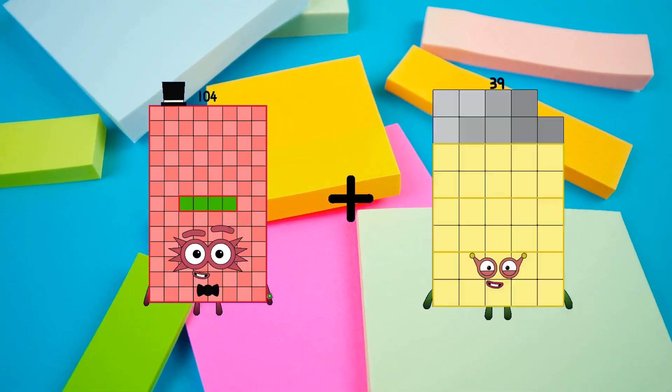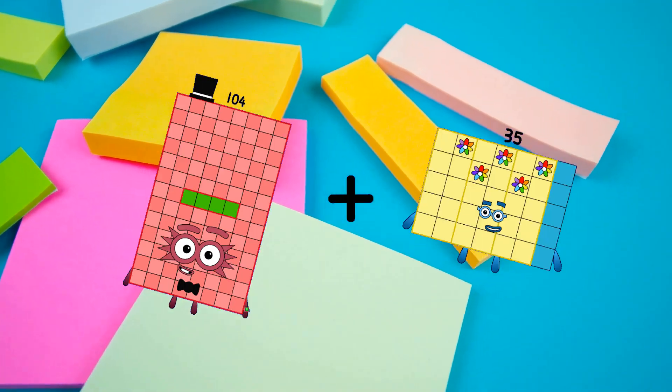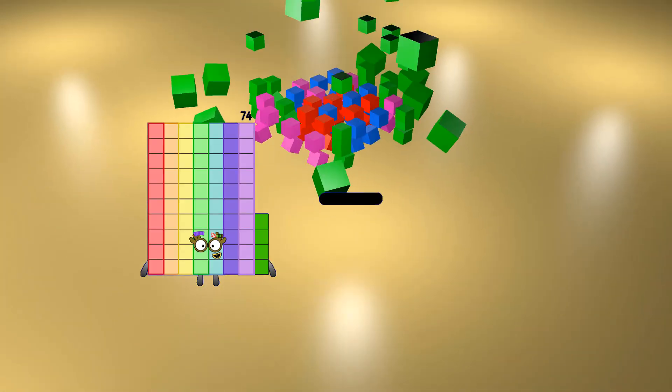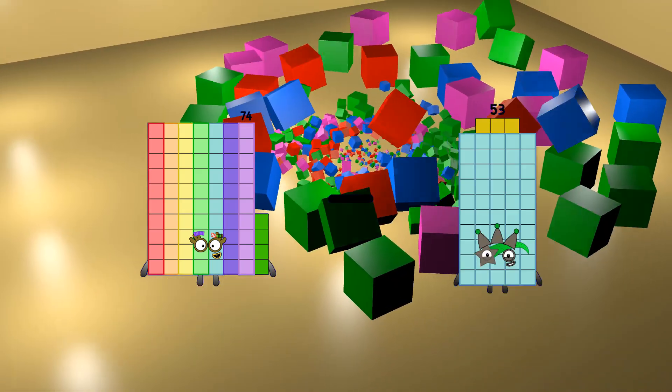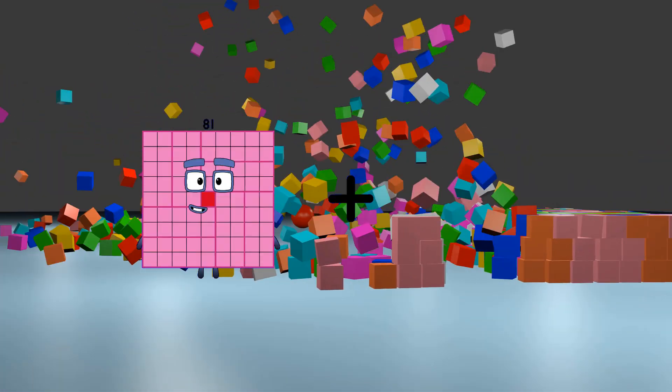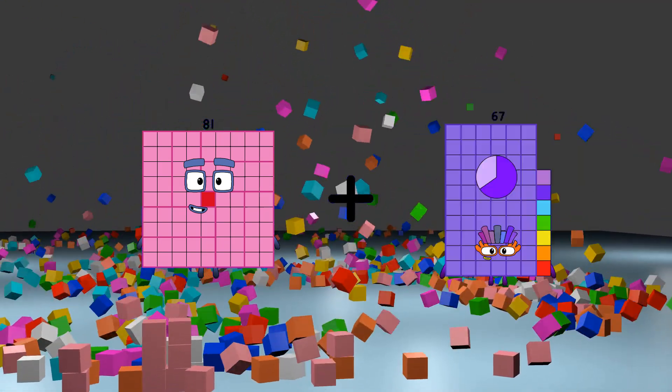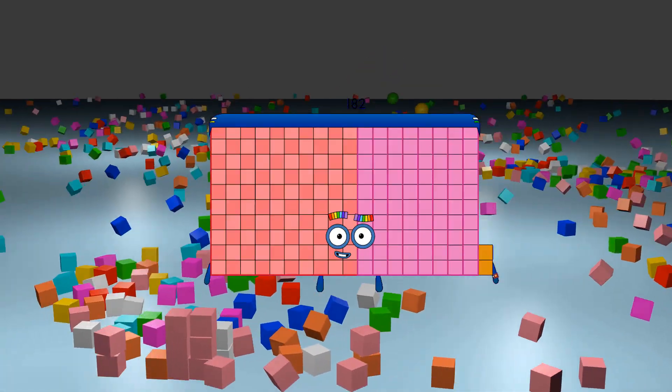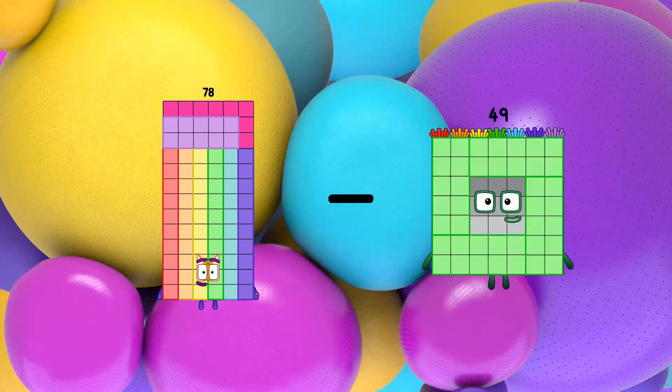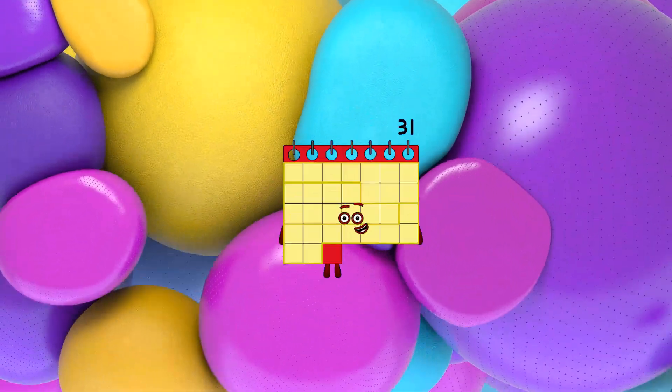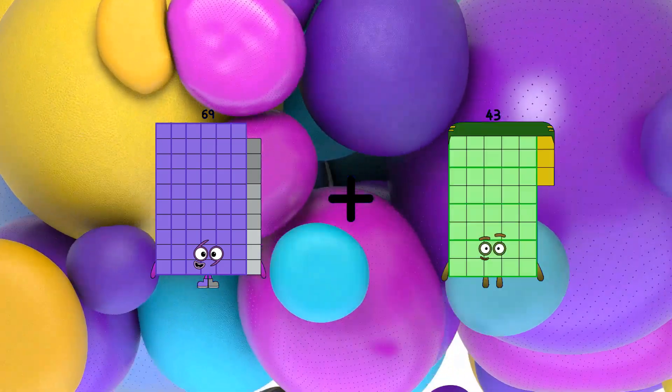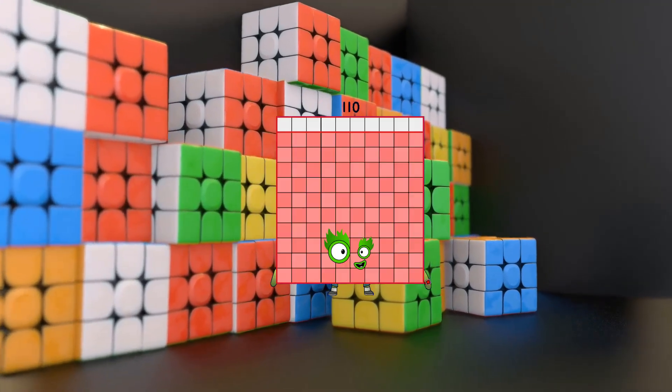104 plus 35 equals 139, 74 minus 53 equals 21, 81 plus 101 equals 183, 78 minus 47 equals 41, 59 plus 41 equals 100.